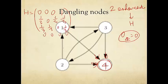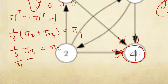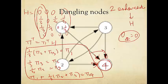If we solve the linear equation associated with π transpose equals π transpose H, we have to solve the following equations: 1/3 π₂ + π₃ = π₁, based on the first column of matrix H; 1/3 π₃ = π₂; 1/3 π₂ = π₃; and π₁ + 1/3 π₂ + π₃ = π₄. Looking at this system of four linear equations, the only solution is that all pi's are zero.